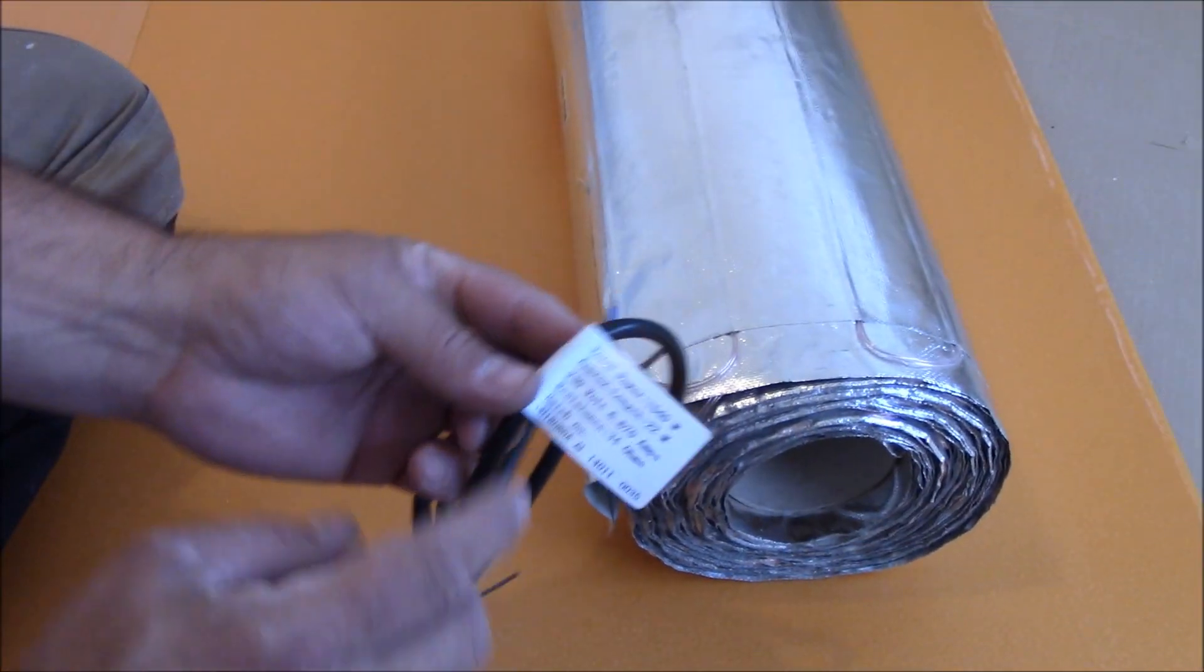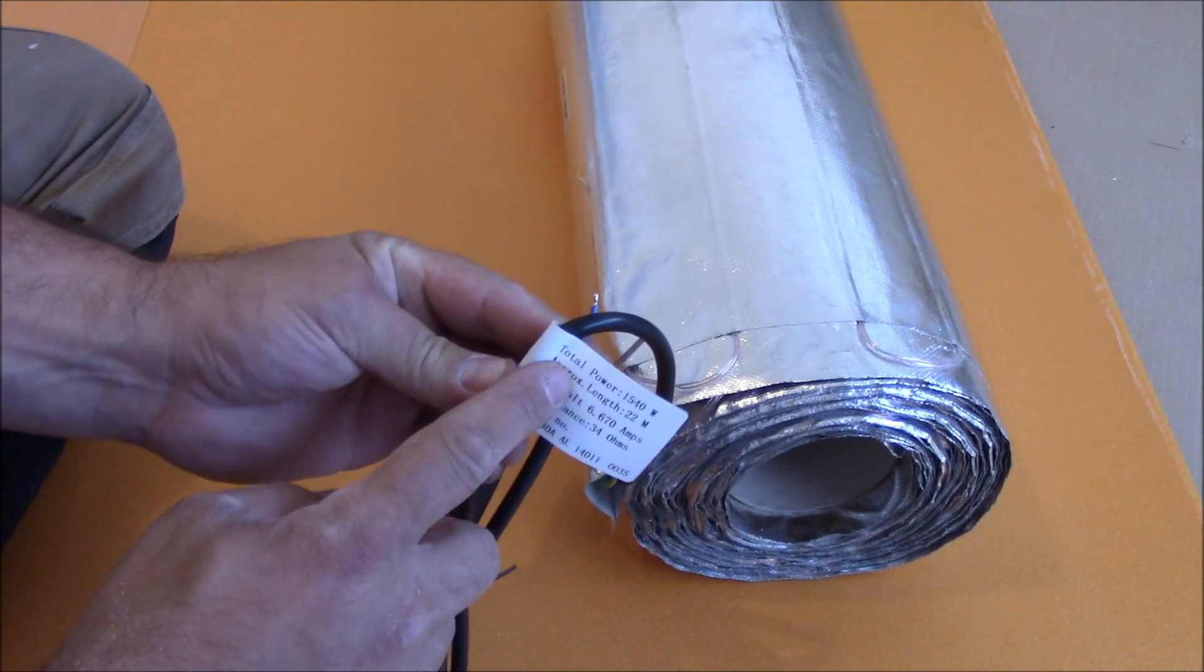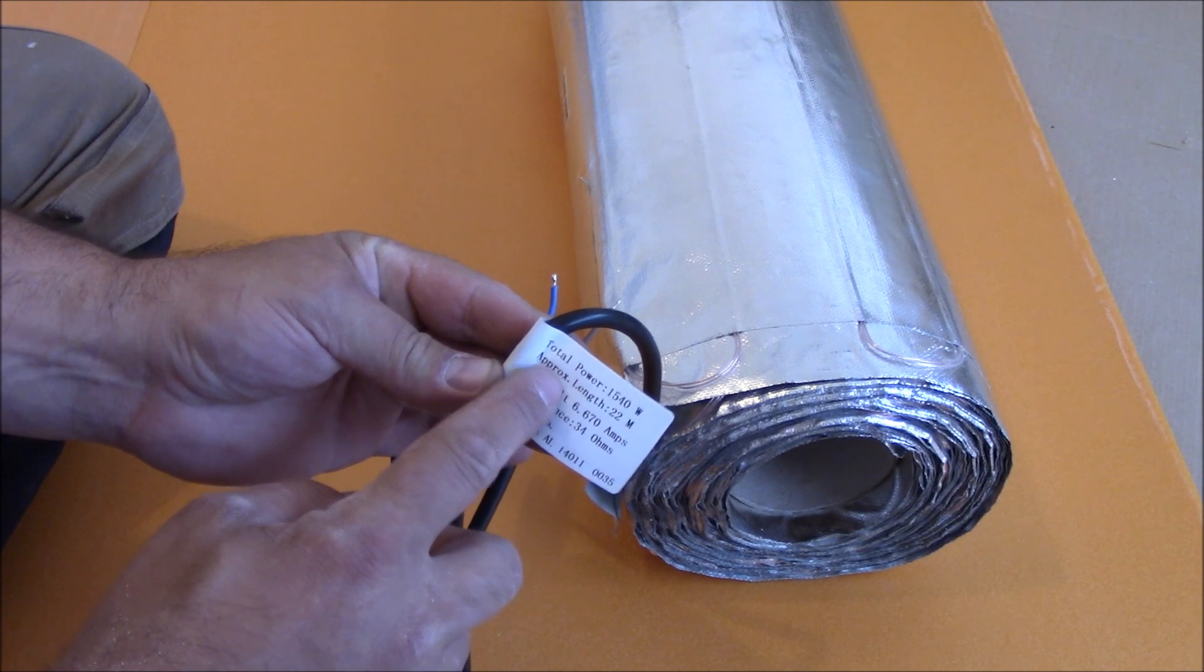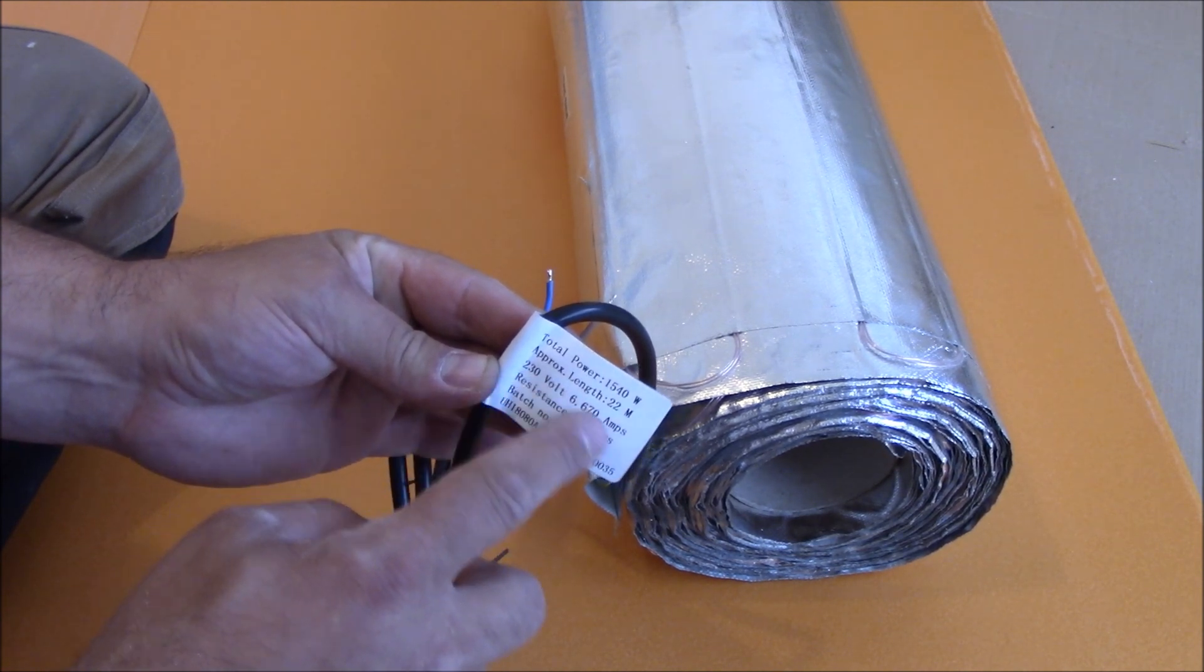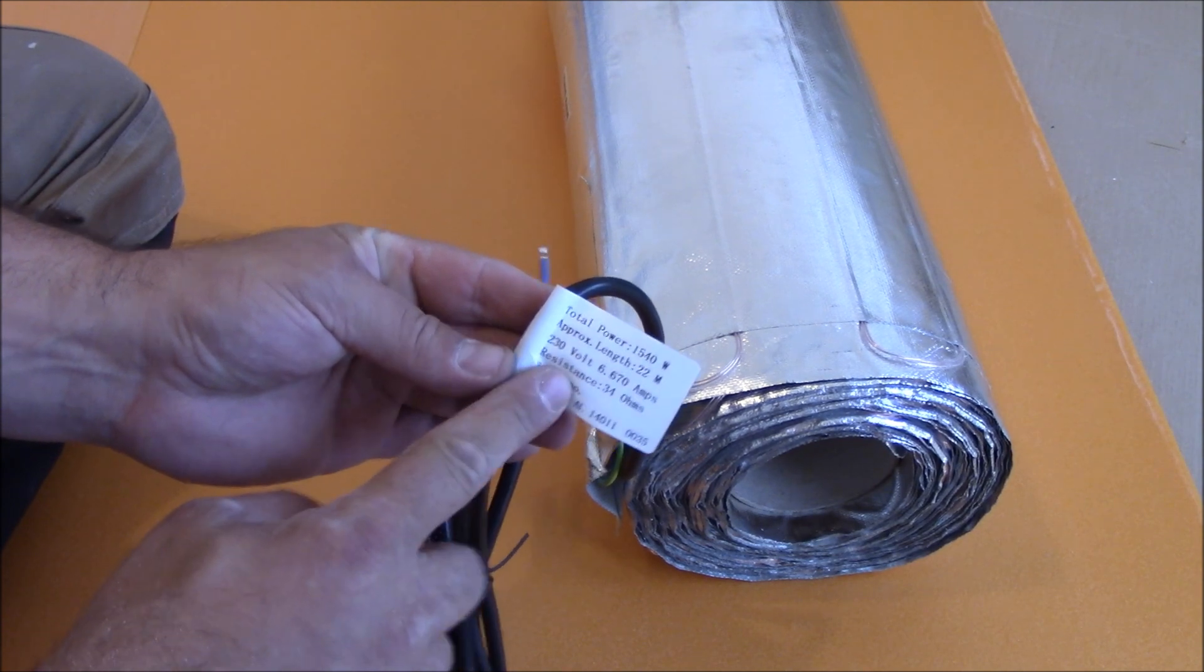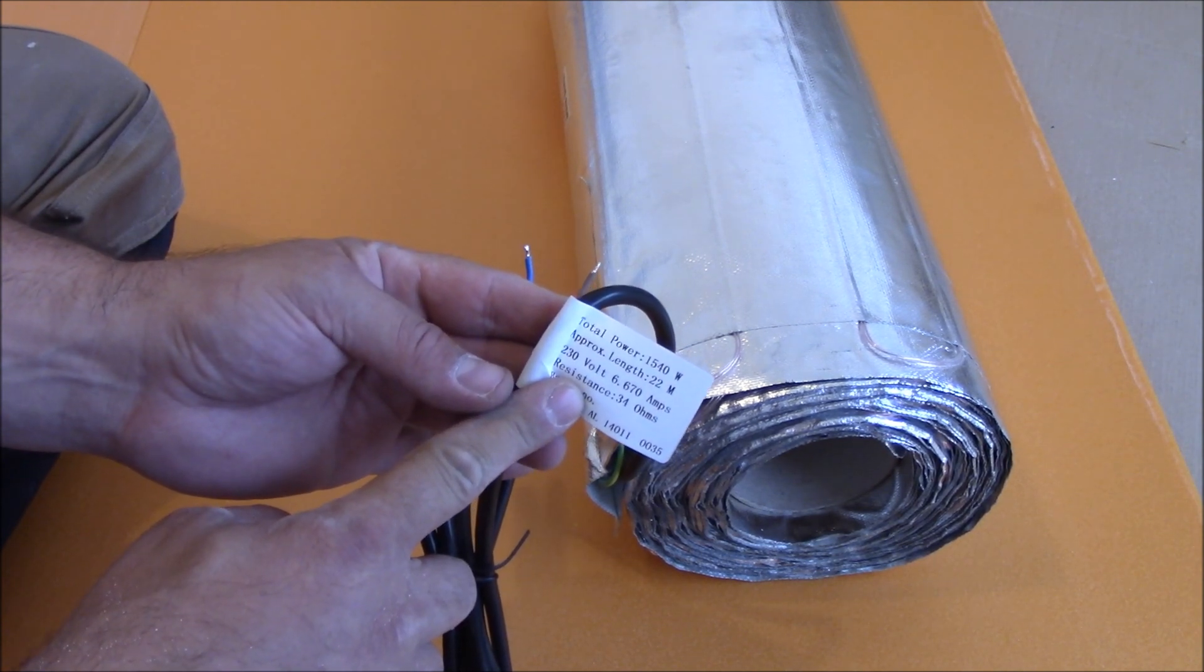On every mat there is a sticker, a label that shows some information about the mat, like the total power, the length of the mat, the voltage and the resistance in ohms. So the resistance is what we need to check.